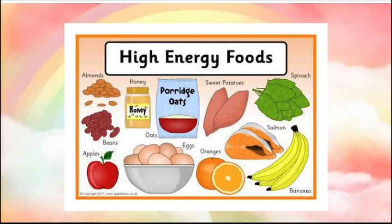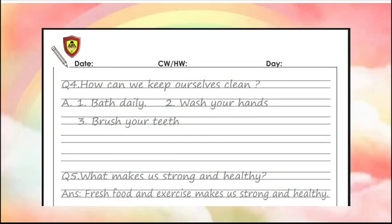Students, look at the picture. These are high energy foods — foods that provide a lot of energy: apple, banana, orange, fruits, fish, salmon, sweet potatoes, spinach, eggs, porridge, oats, honey, and almonds. You have to eat all these to get energy. High energy foods — you have to eat all of these.